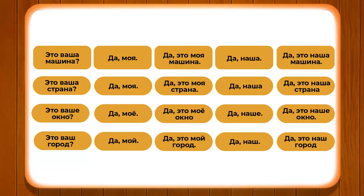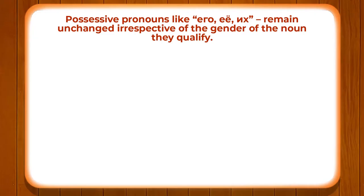As per the gender of the noun, the question is also being changed. We use VASHA for STRANA, VASHA for AKNO, VASH for GOROD, and VASHA for MASHINA. Paying attention to the endings: MASHINA is feminine gender, that is why VASHA; STRANA is also feminine, so VASHA; AKNO is neuter, so VASHE; and GOROD is masculine, so VASH. This important aspect of matching the possessive pronoun to the gender should now be clear.